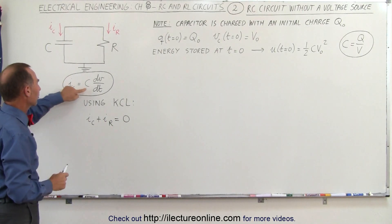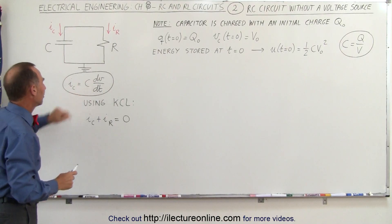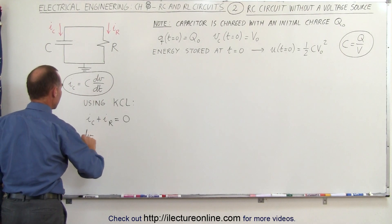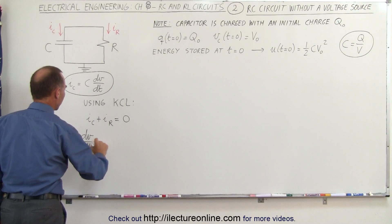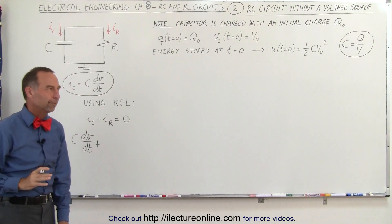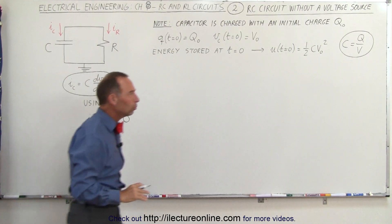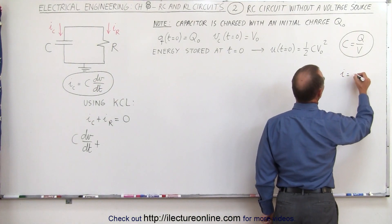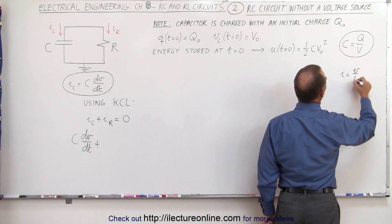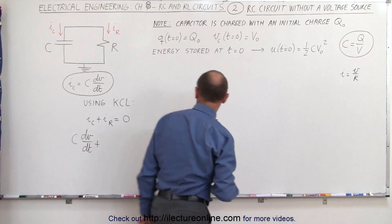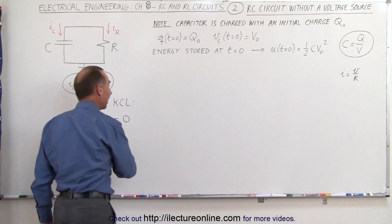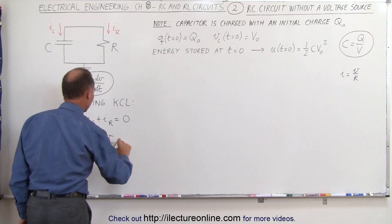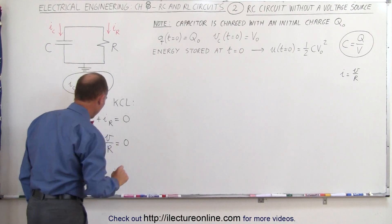The current to the capacitor is defined as C·dV/dt, so we can write this as the capacitance times dV/dt plus the current to the resistor. Using Ohm's law, the current I is equal to V over R, so therefore we can write the resistor current as V over R, and that must equal zero.